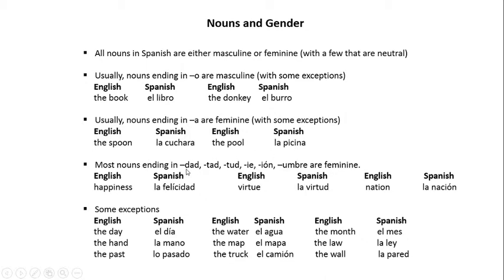Most nouns ending in -dad, -tad, -tud, -ie, -ión, or -umbre are feminine. Some examples: happiness is 'la felicidad', virtue is 'la virtud', and nation is 'la nación'. Below are some exceptions: the day is 'el día', the hand is 'la mano', the past is 'lo pasado', the water is 'el agua', the map is 'el mapa', and the truck is 'el camión'.